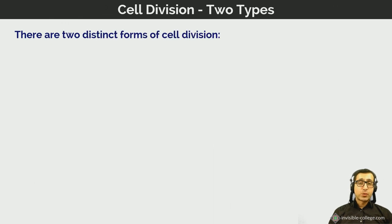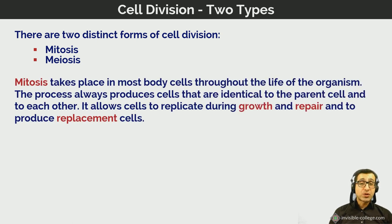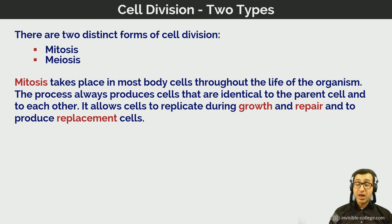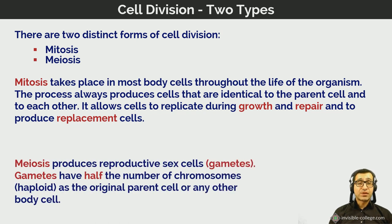There are two distinct forms of nuclear division: mitosis and meiosis. Mitosis takes place in somatic or body cells throughout the life of an organism, always producing cells identical to the parent cell and to each other. Its purpose is to allow cells to replicate during growth, repair, and to replace dead or dying cells. In contrast, meiosis only occurs in the reproductive organs and produces gametes — sex cells — which are haploid, having half the number of chromosomes as a body cell.